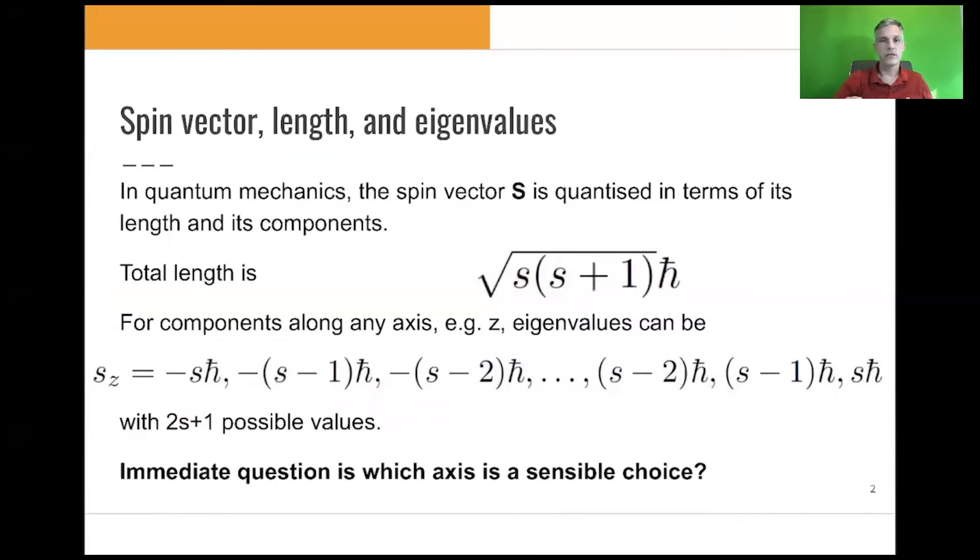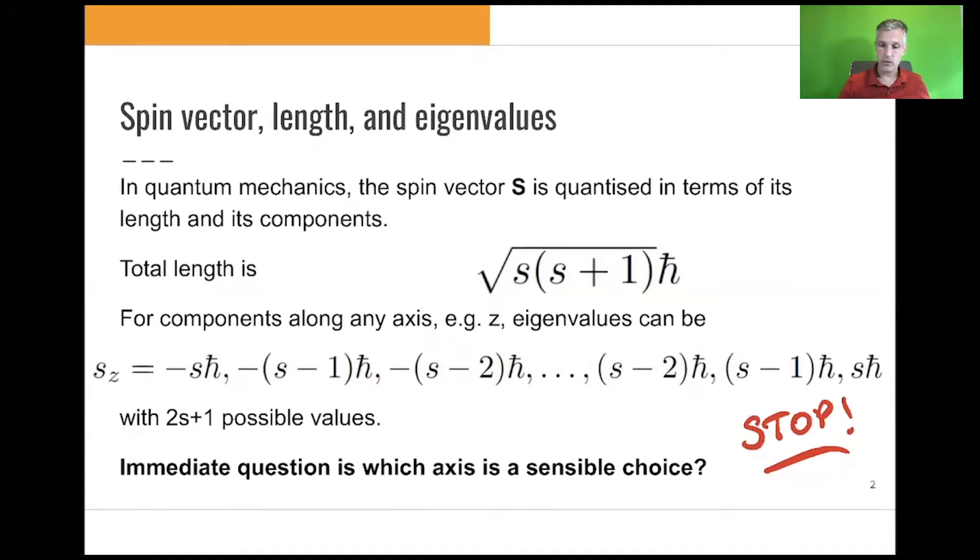I'll pick here just arbitrarily the z-axis, but the question is obvious: which axis is a sensible choice for this problem? I want you to actually stop here and think about this. What are sensible options if you want to get an eigenvalue with the physical state of particles? Which axes are the right ones to choose? There's no right and wrong in this discussion.